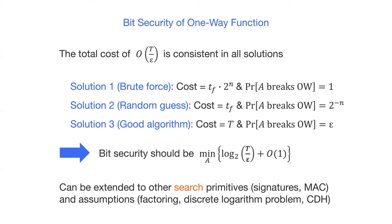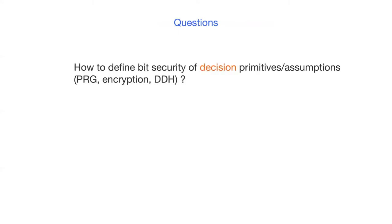This way of defining bit security can be extended to other search-type primitives, such as signature schemes. Also, to search-type assumptions such as the factoring problem and the discrete logarithm assumption. The question we want to ask in this work is how to define bit security of decision-type primitives and assumptions, such as pseudo-random generators, encryption schemes, and decisional assumptions.